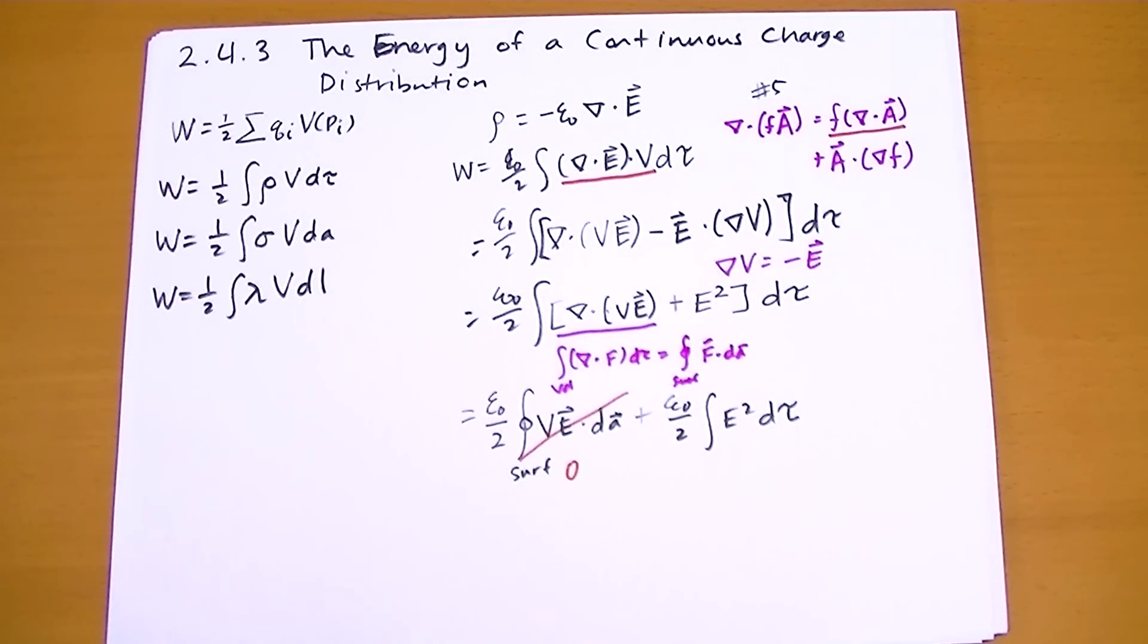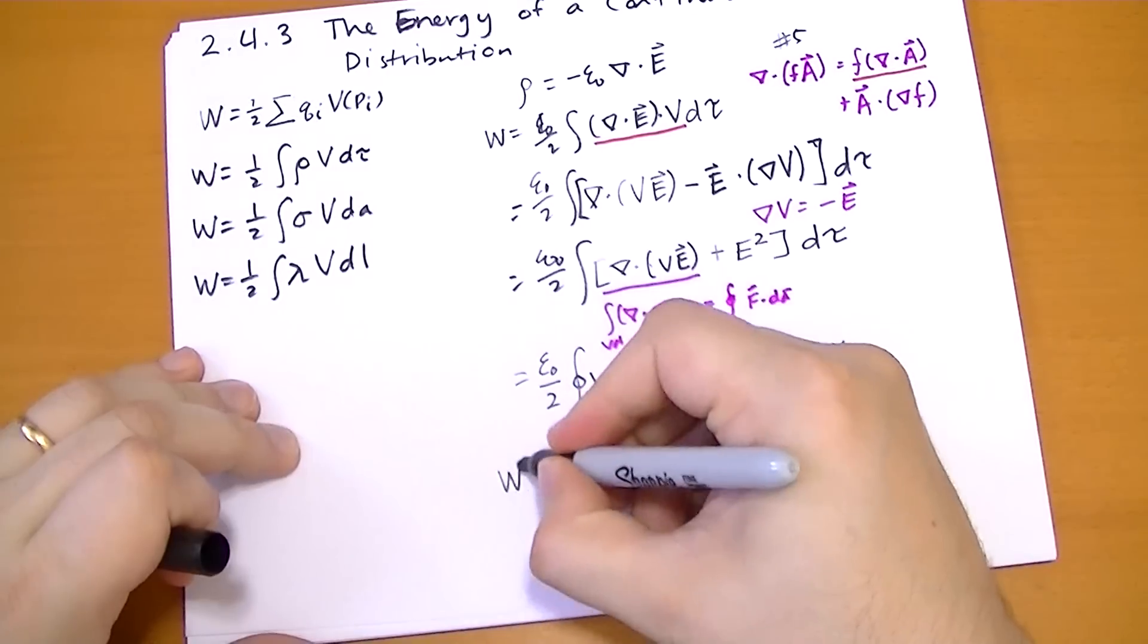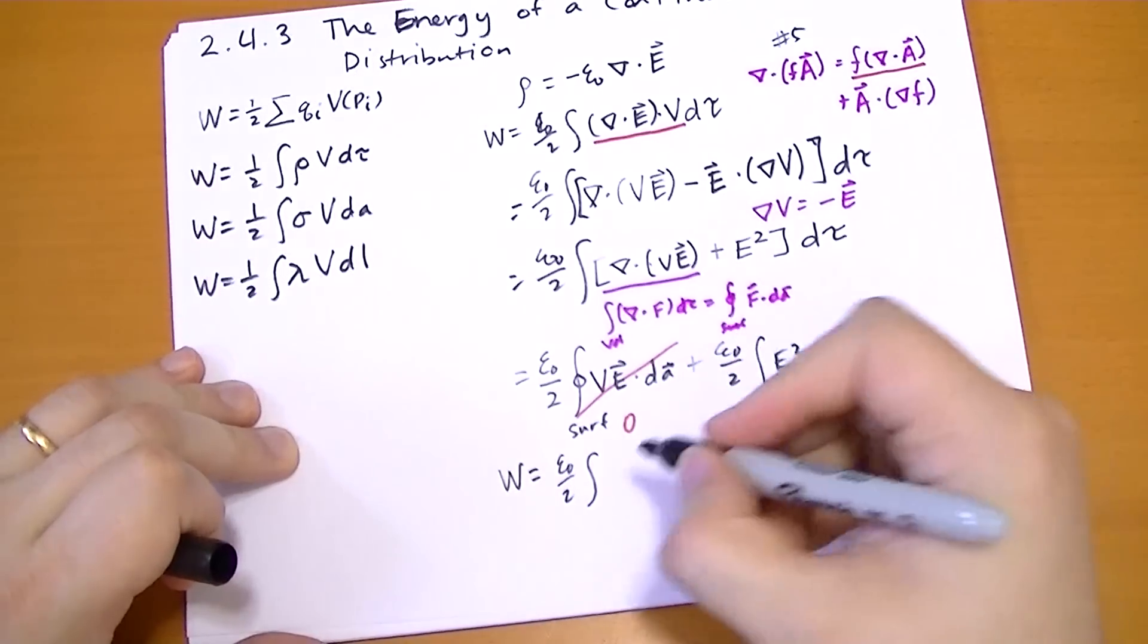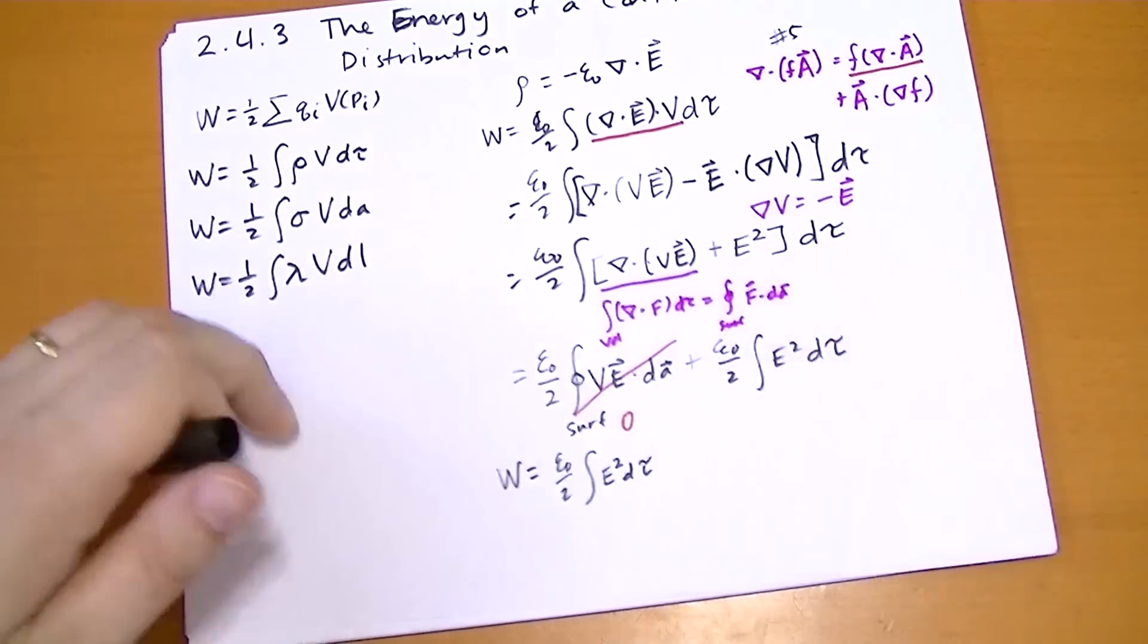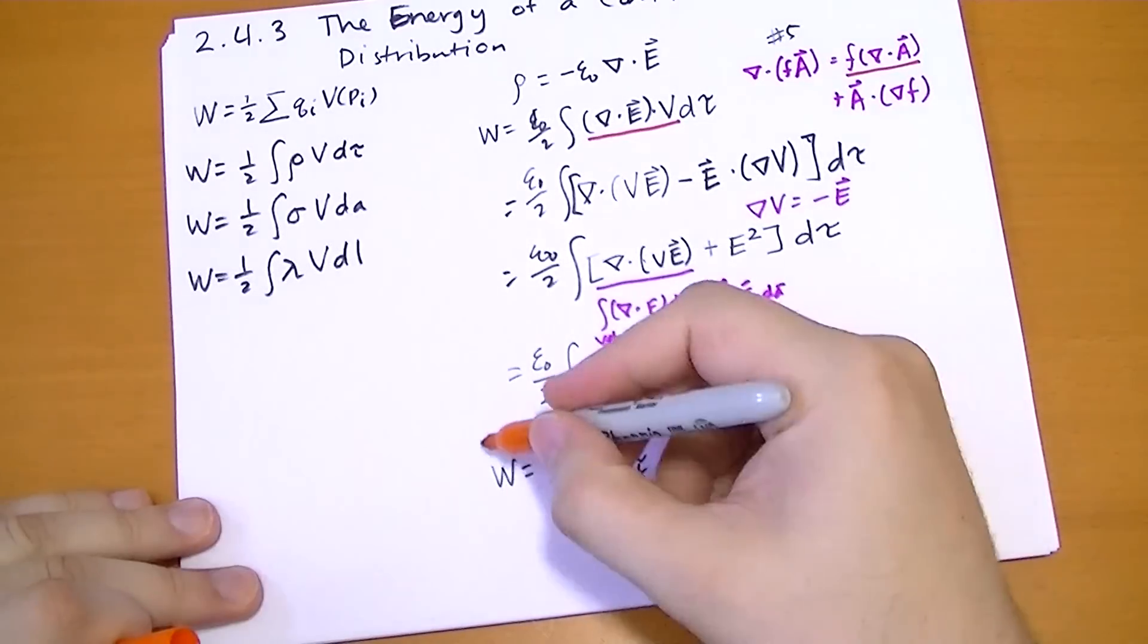And so we're left with the simple result that the energy it takes to assemble a continuous charge distribution is just equal to epsilon naught over two times the volume integral of E squared d tau. Now, that is a very, very interesting result.